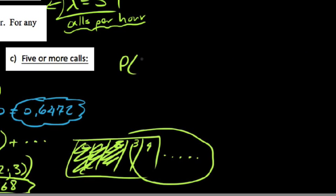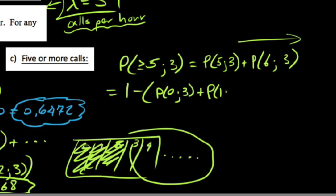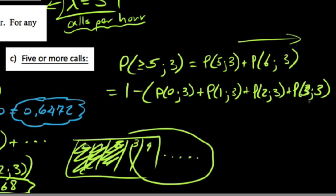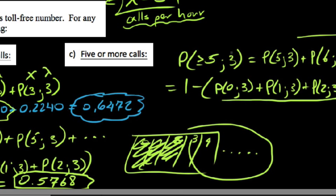For Part C: find the probability of five or more phone calls — P(X ≥ 5), given lambda equals three. Again, this goes upward without bound, so we use complementary events: P(X ≥ 5) = 1 minus the probabilities for all outcomes four or less — that is, minus P(0|3) + P(1|3) + P(2|3) + P(3|3) + P(4|3).